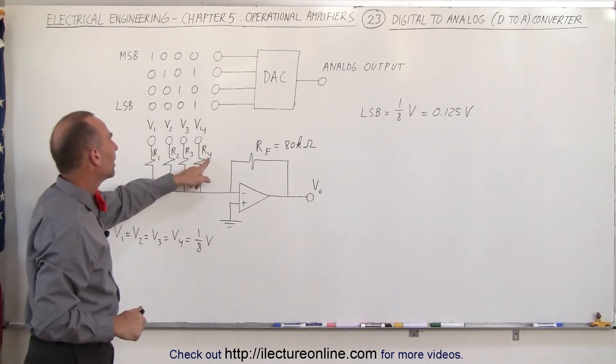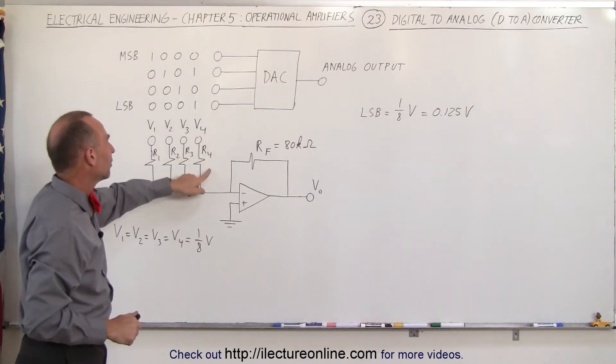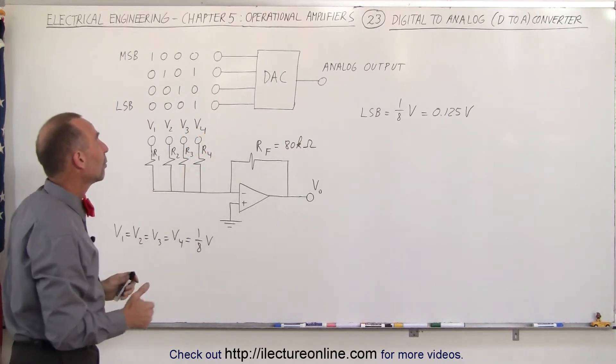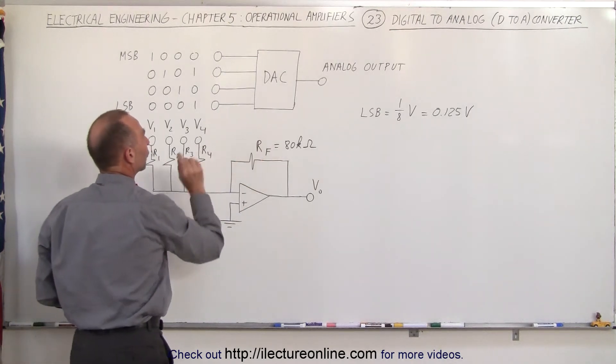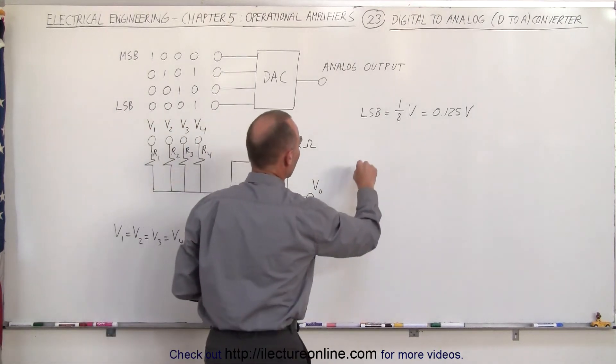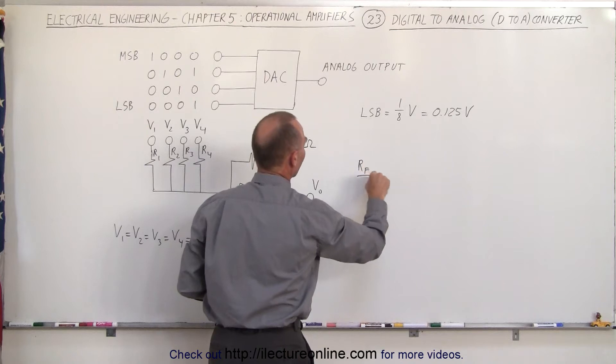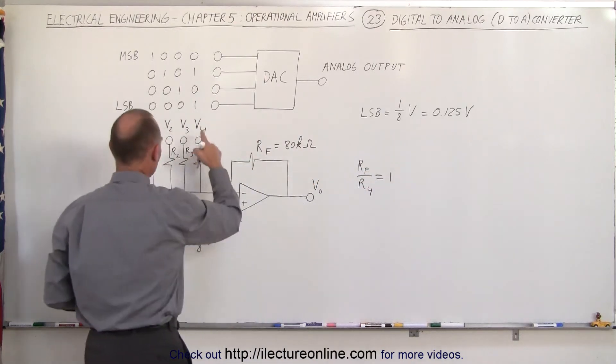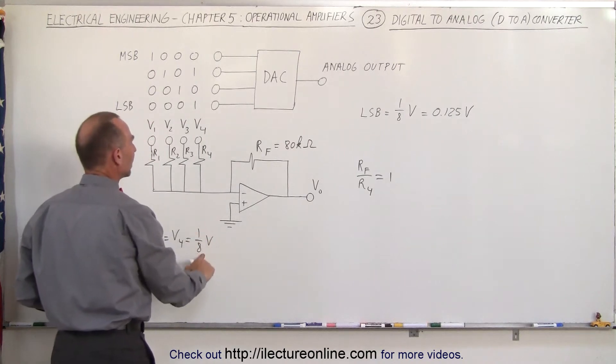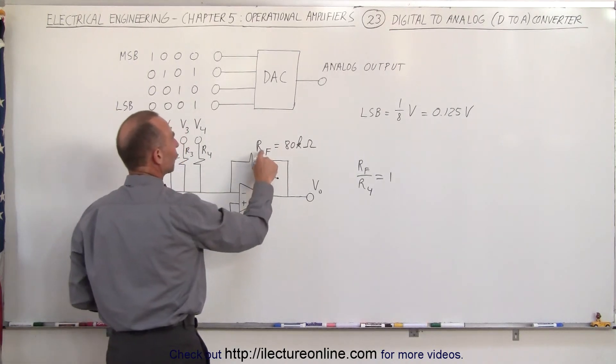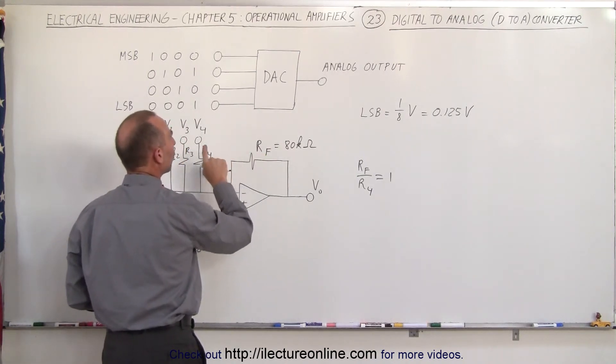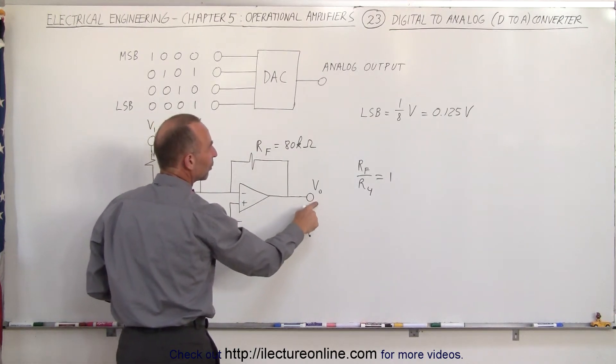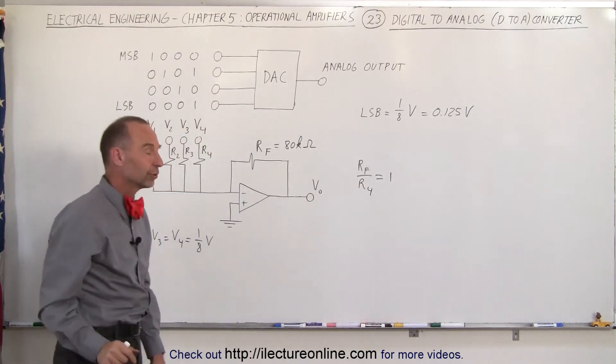Since we want V4 to be the least significant bit, we want the ratio of RF to R4 to be equal to one. So we're going to make RF divided by R4 equal to one. So if we set each of these voltages equal to one eighth of a volt, and we know that the ratio of RF to R4 is equal to one, then the input of V4 will result in an output of no more than one eighth of a volt.